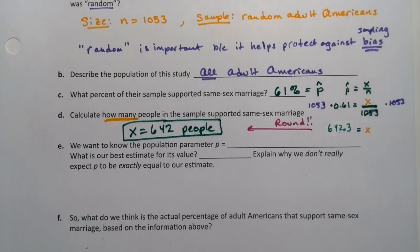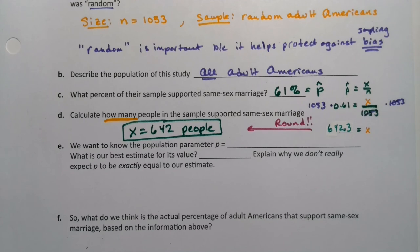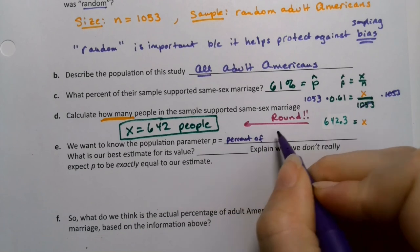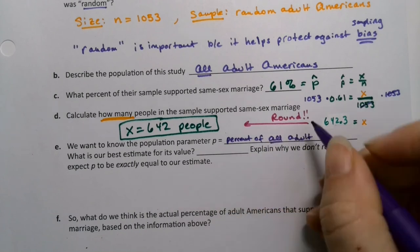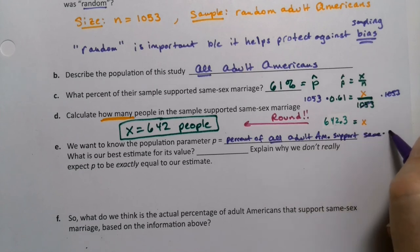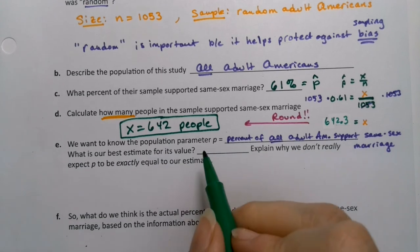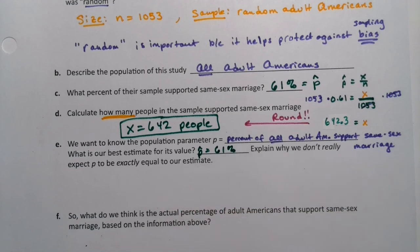But we want to know the population parameter P. What would be P? P would be the percent of all adult Americans that support same-sex marriage. We don't know what that is. What we could do is get an estimate, a guess for what it is. Our best guess is P hat, 61%.